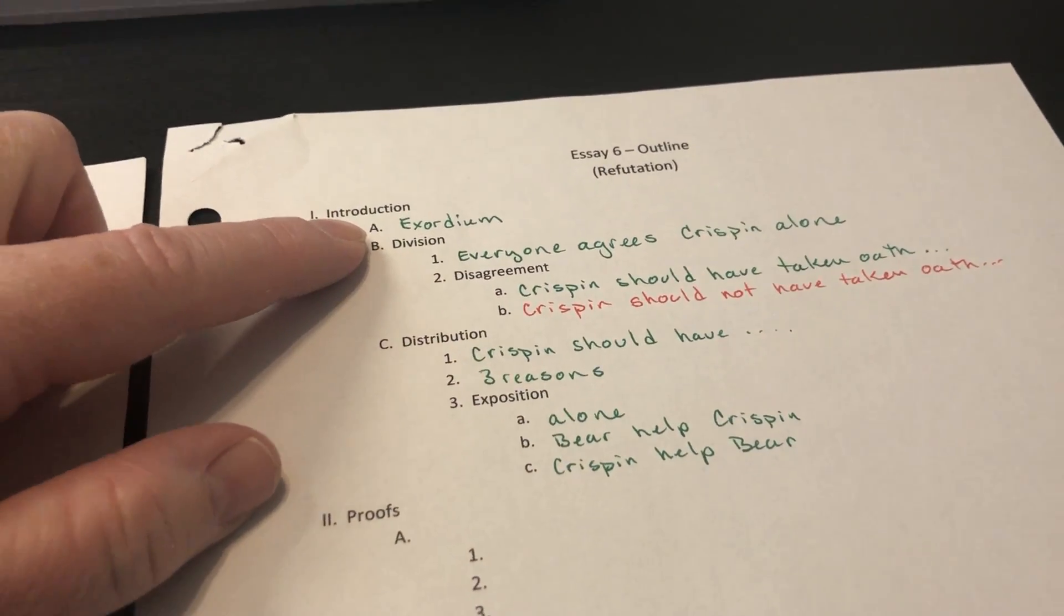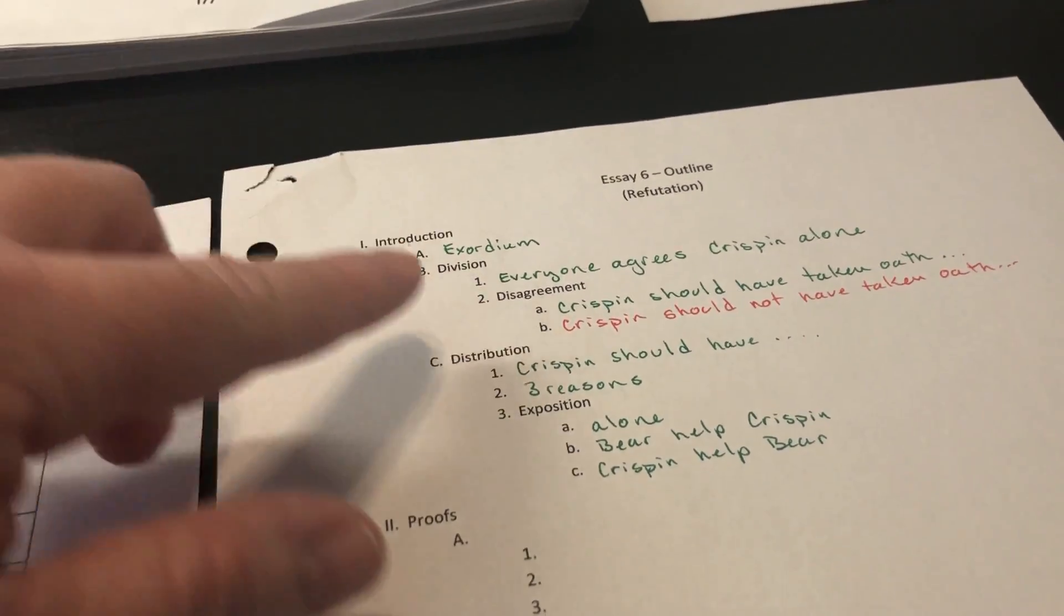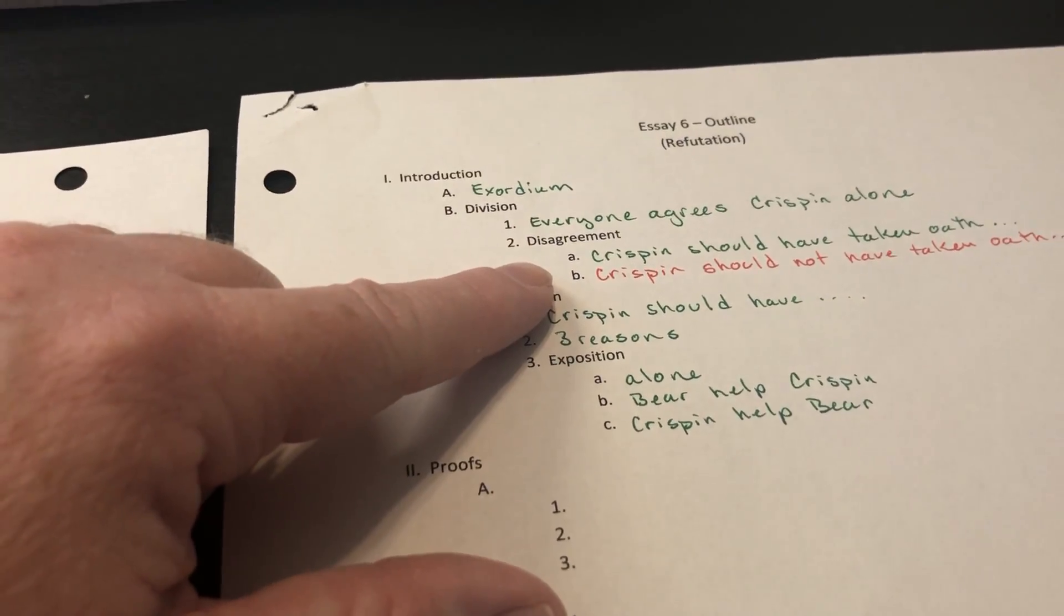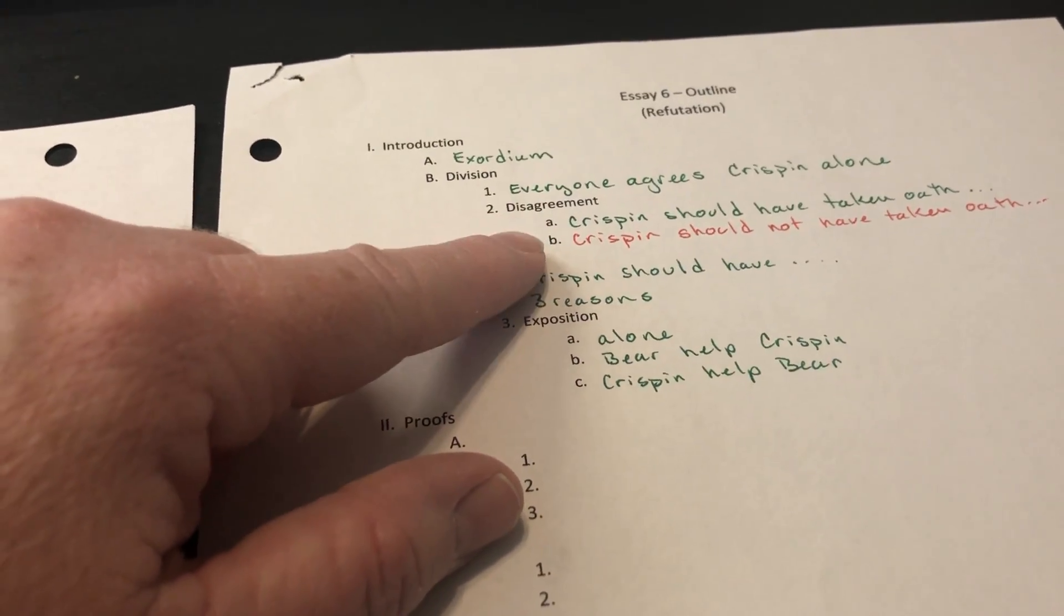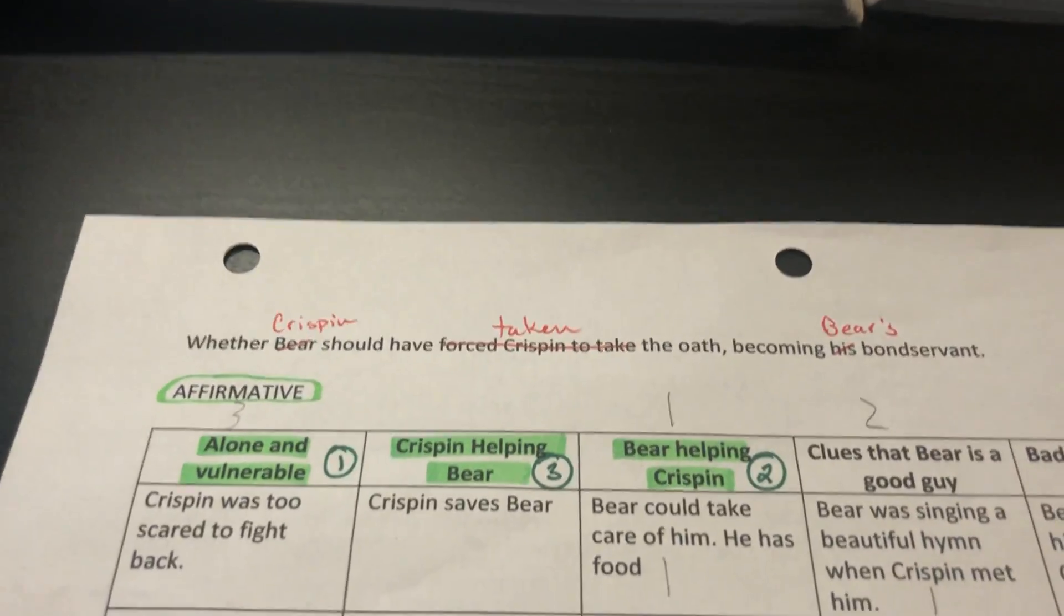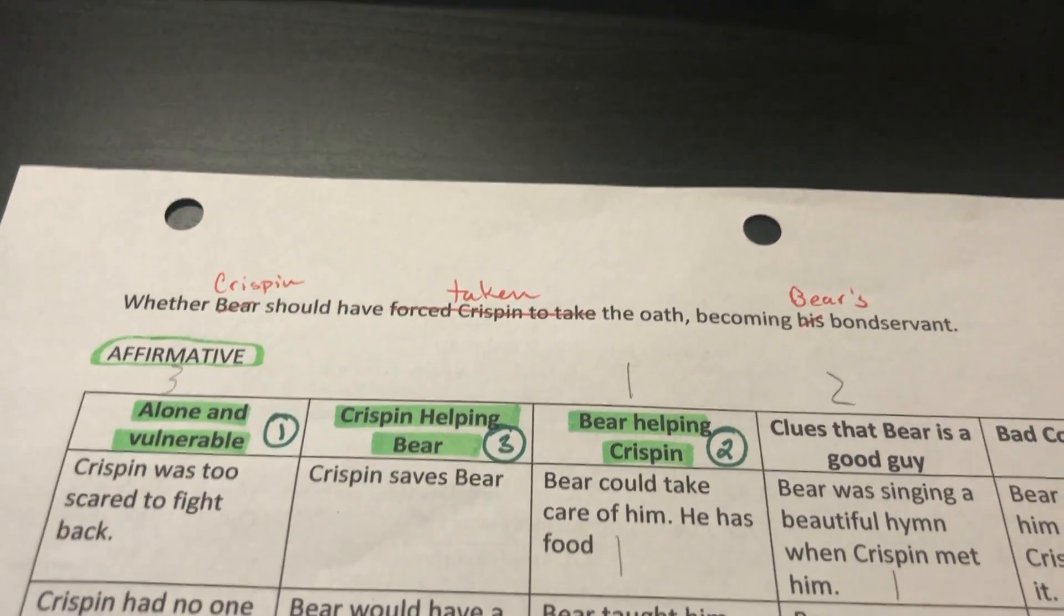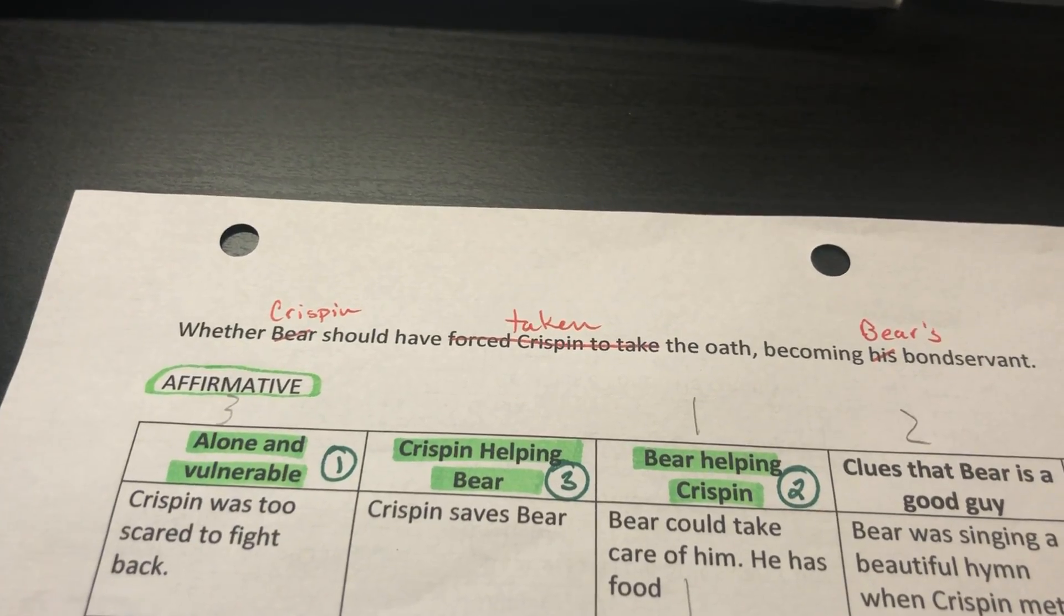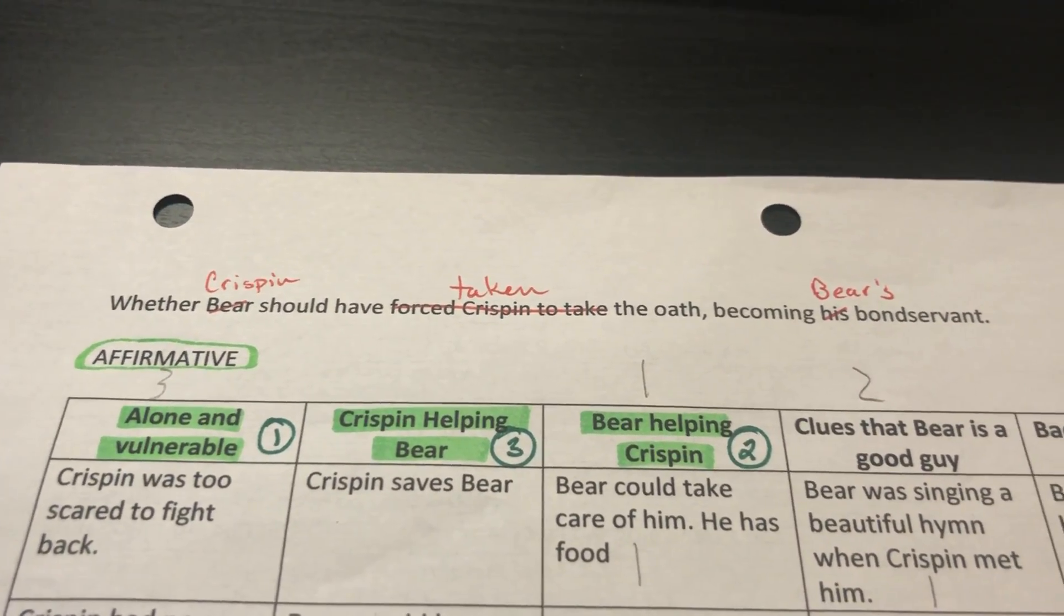We have our exordium, which we did not take the time to figure out because I knew we were going to need more time for refutation. Our agreement: everyone agrees that Crispin is alone. What we disagree on is whether he should have taken the oath or should not have taken the oath. I should mention that we ended up tweaking our class issue, which is totally cool to do at this point. We originally said whether Bear should have forced Crispin to take the oath. We ended up deciding that most of our reasons really better fit Crispin being the one making the decision.